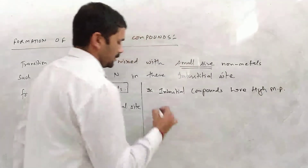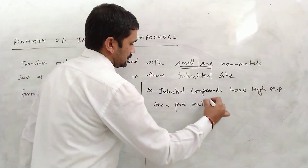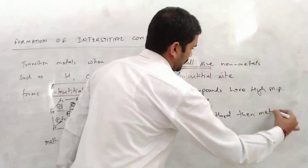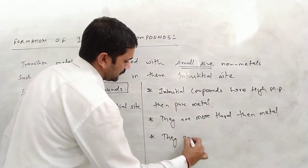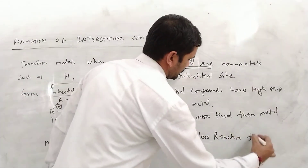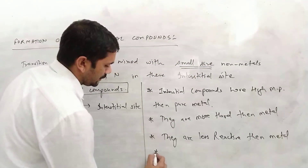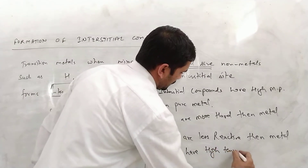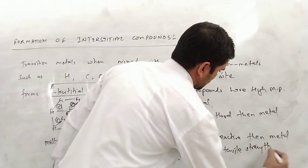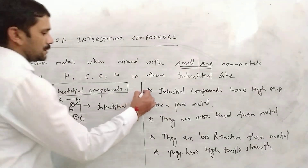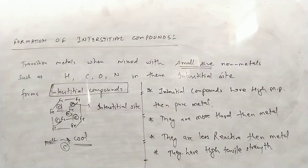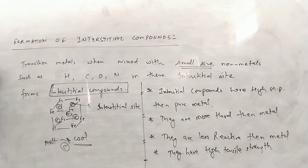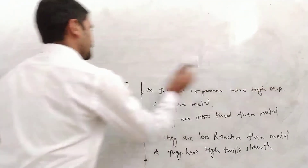Interstitial compounds have the following properties compared to the pure metal: they have a higher melting point, they are harder, they are less reactive, and they have higher tensile strength. So forming interstitial compounds improves the properties of the transition metal significantly.